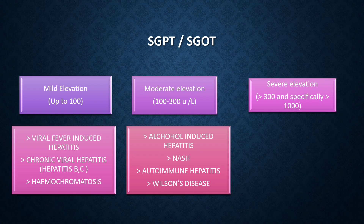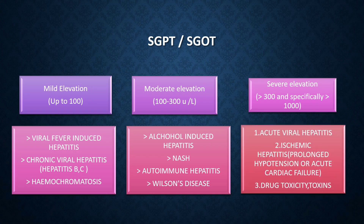Moderate elevation (100 to 300) is seen in alcohol-induced hepatitis, NASH (non-alcoholic steatohepatitis), autoimmune hepatitis, and Wilson's disease. Severe elevation means more than 300, specifically more than 1000, and is seen in only three conditions: acute viral hepatitis like hepatitis A or hepatitis E; ischemic hepatitis due to prolonged hypotension or acute cardiac failure; and drug toxicity or toxins like paracetamol poisoning to the liver.